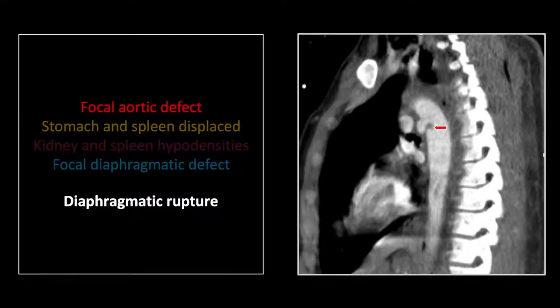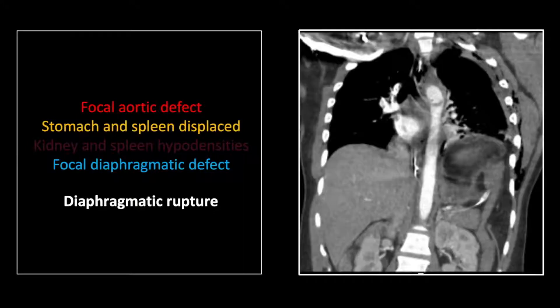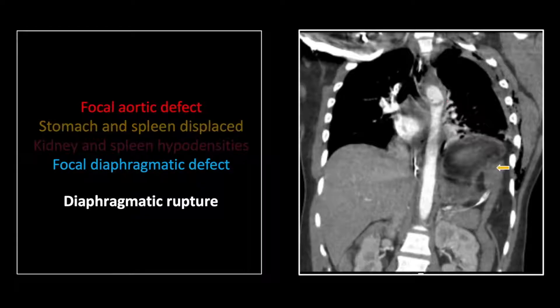On the sagittal view, there is the intimal flap and associated pseudoaneurysm of the isthmus laceration. There it is again on the coronal.